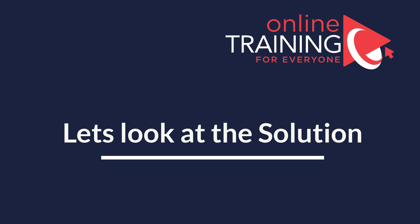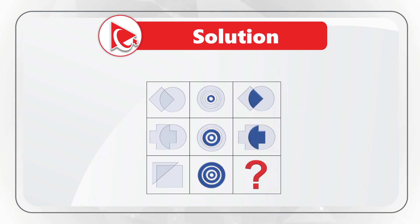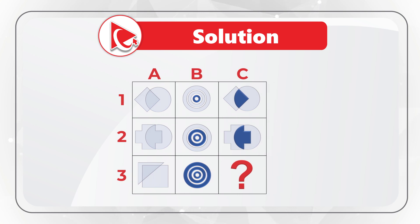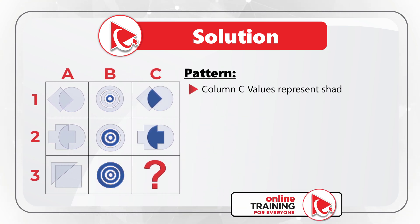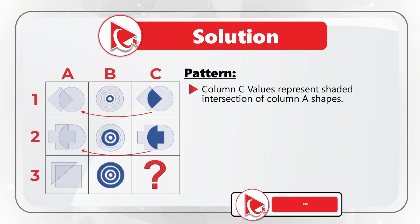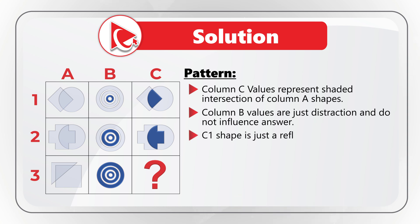Let me add some references to the matrix. We will name columns A, B, and C, and rows 1, 2, and 3. You probably noticed that column C values represent the shaded intersection of column A shapes. Considering this, column B values are just a distraction and do not influence the answer in any way. For example, the C1 shape is just a reflection of the A1 shape with the cross-shaded areas.